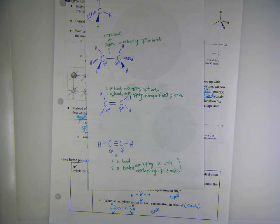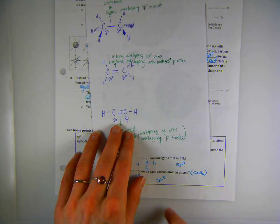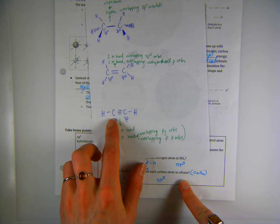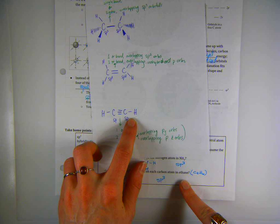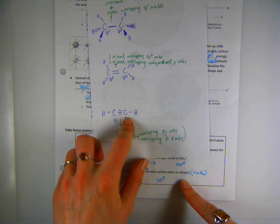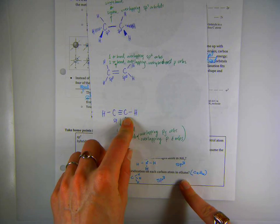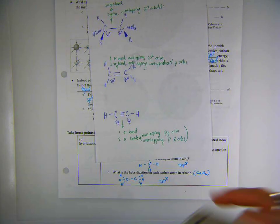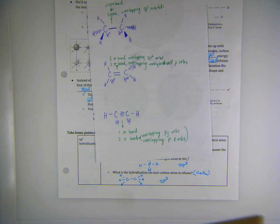And then finally, for ethyne, another molecule that we've talked about, C2H2, we've already said that each carbon is sp hybridized, meaning it's blended together one s and one p orbital of its valence shell to house bond. So then what's unhybridized on carbon? There must be two p orbitals that are unhybridized on carbon.